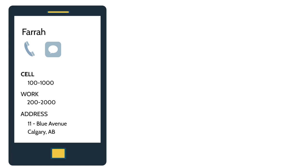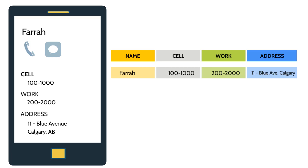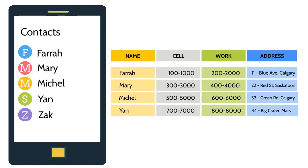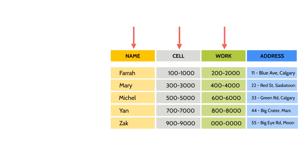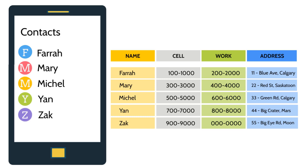Databases store information in tables. Here's the table for your cell phone contacts. When you added Farrah's contact information, you populated the database with her name, cell and work phone numbers, and address. You did the same for all your other contacts: Mary, Michelle, Jan, and Zach. In the database table, columns divide information into different categories. These are called fields. Each row of the table contains an entry with this group of related information. These are called records. Even though you don't see this table, it's at work behind the scenes in your phone.